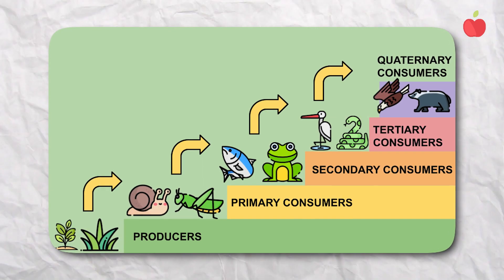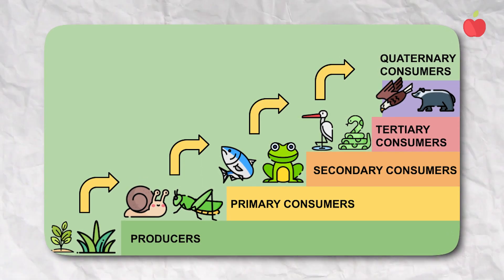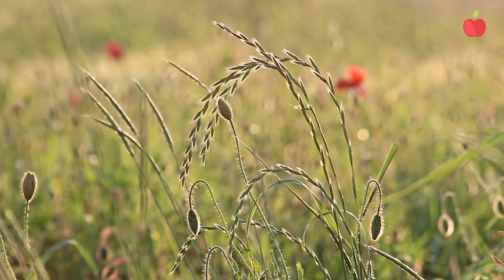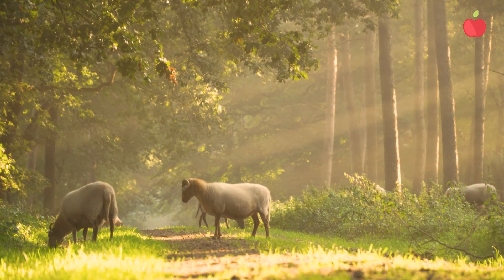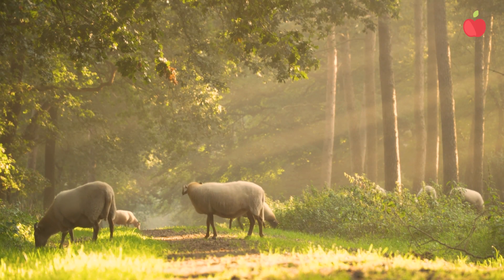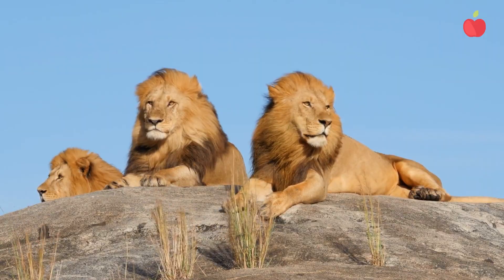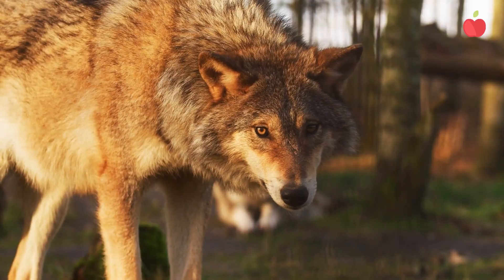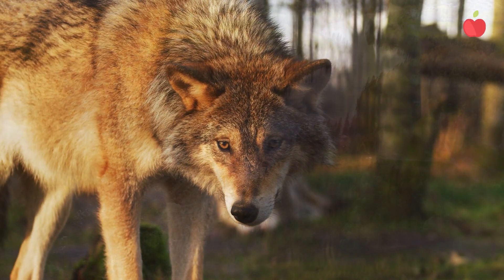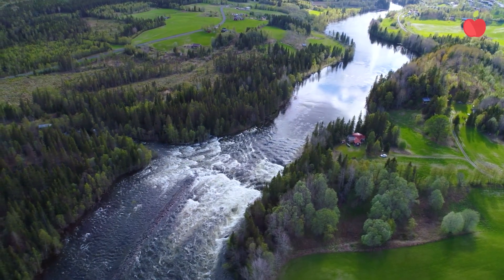Plants, and the glucose they synthesize, are the starting point of most food chains. They are called primary producers, and are responsible for supplying energy and nutrients to herbivores, which feed omnivores and carnivores, and so on. So as you can see, photosynthesis is the foundation of entire ecosystems.